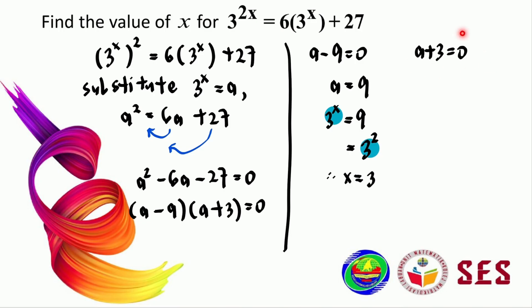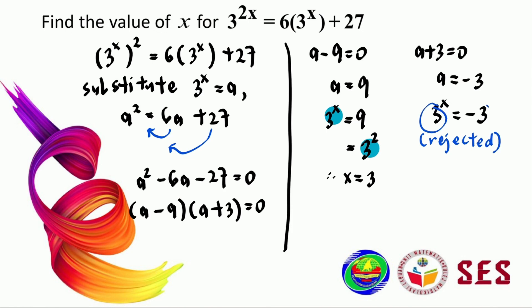For the solution a equals minus 3, substituting back gives 3 to the power of x equals minus 3. We reject this solution because a positive base cannot equal a negative number. This is the end of chapter 1.1 on indices. Thank you for your attention and see you in the next video. Have a great day — take care.